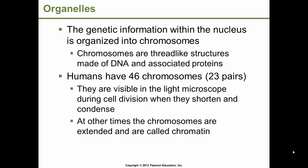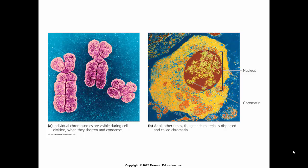Humans have 46 chromosomes — we have 23 pairs. 23 come from our mother's side and 23 from our father's side. Chromosomes are visible in the light microscope during cell division when they shorten and condense, typically during metaphase. At other times, the chromosomes are extended in that dispersed state and called chromatin. This image shows the individual chromosomes that are visible during cell division — during the cell cycle when they shorten and condense. Typically these will be taken during the metaphase state. When the cell cycle is not going on and DNA replication is not occurring, the genetic material is more dispersed and called chromatin.